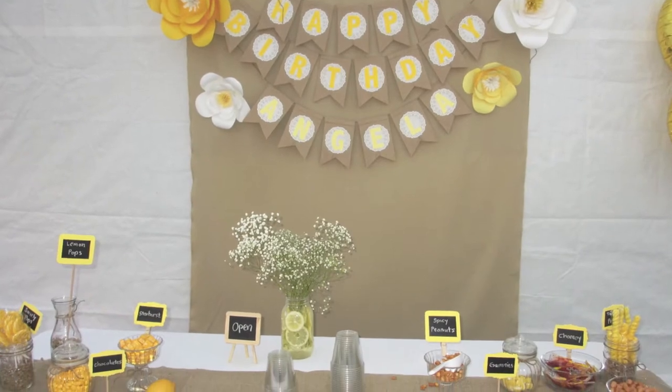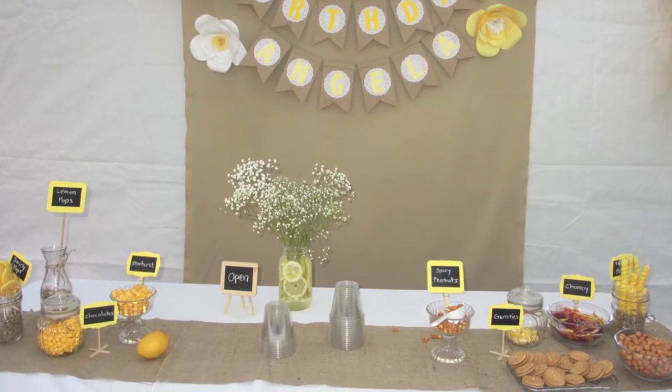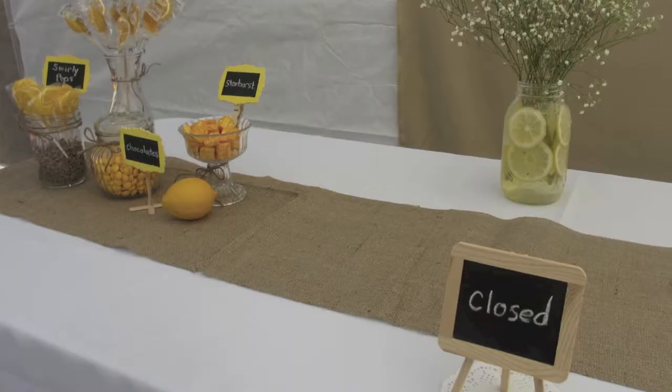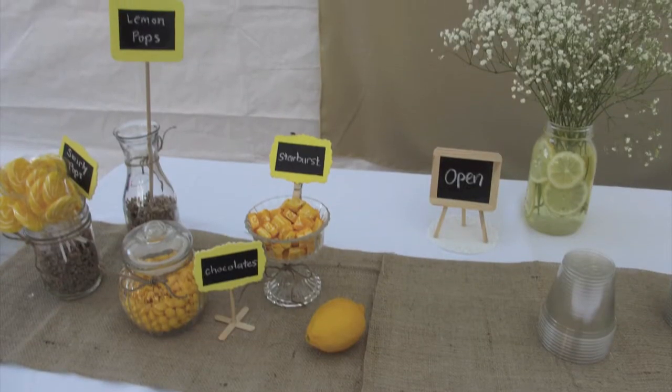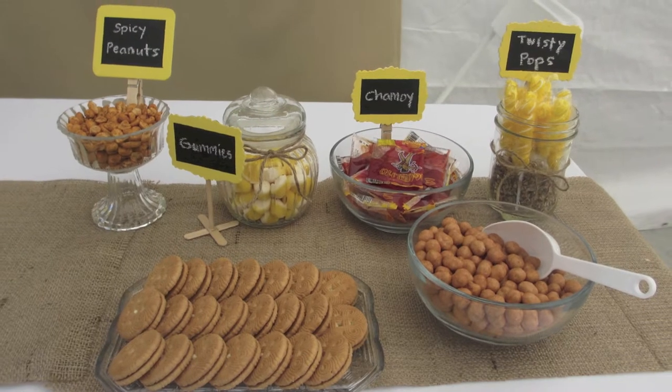On the table we had different types of goodies for guests to eat. We tried to stay with the color scheme, mostly yellow color candy and treats. We got a lot of them from Party City and we got all the containers from the dollar store.